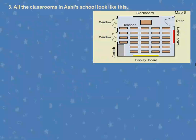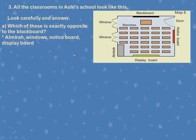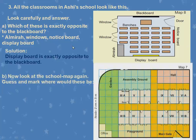All classrooms in Ashay School look the same: opposite the door are windows, on the right side when you enter is the blackboard, and on the left is the notice board. Which of these is exactly opposite the blackboard — almirah, windows, notice board, or display board? The display board is exactly opposite the blackboard. Now mark the blackboard in classrooms Third A and Seventh — when you enter the door, the blackboard is on the right side.